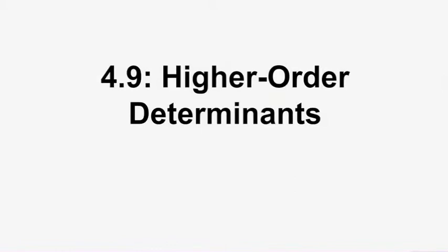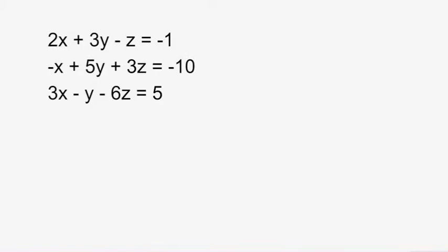Chapter 4.9 is on higher order determinants. Higher order determinants are determinants that are greater than second order, so we'll be looking into third order determinants. A third order determinant is used when you have a linear system that has three or more variables.